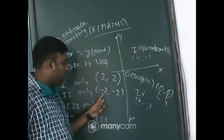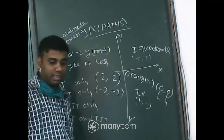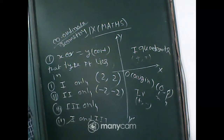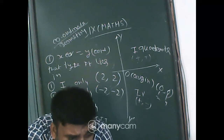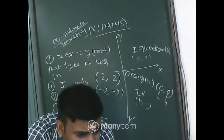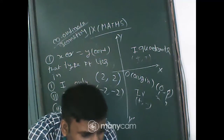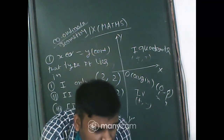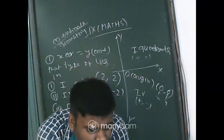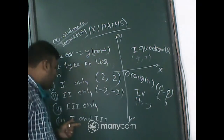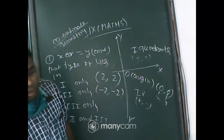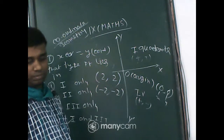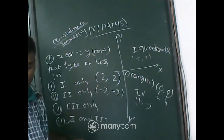Third quadrant also has x coordinate equal to y coordinate. That's why the correct answer is 1 and 3. Got it everyone? Any problem? Ask me now quickly.